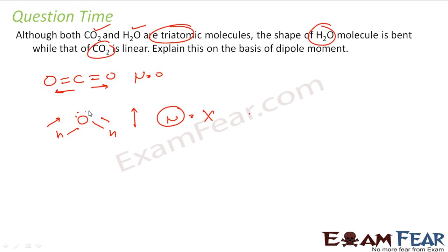Using VSEPR also we can explain. Using VSEPR if you see this is a case, this is a case for two lone pair plus two bond pair. That means it is bent.